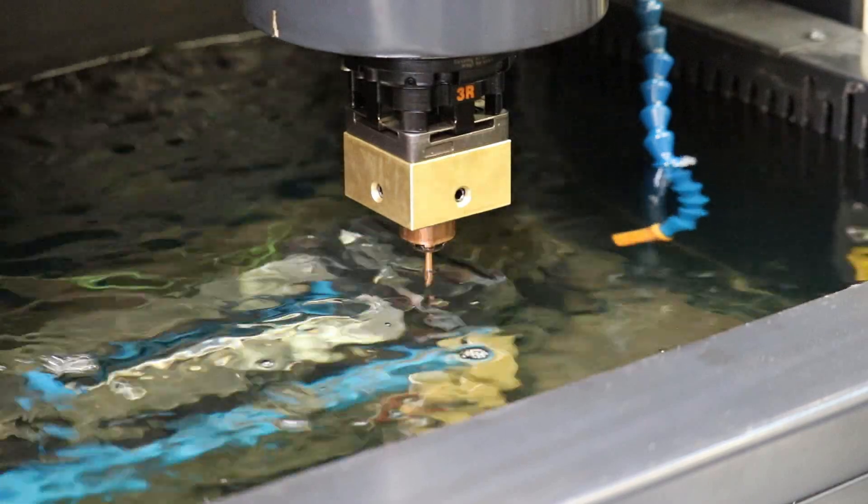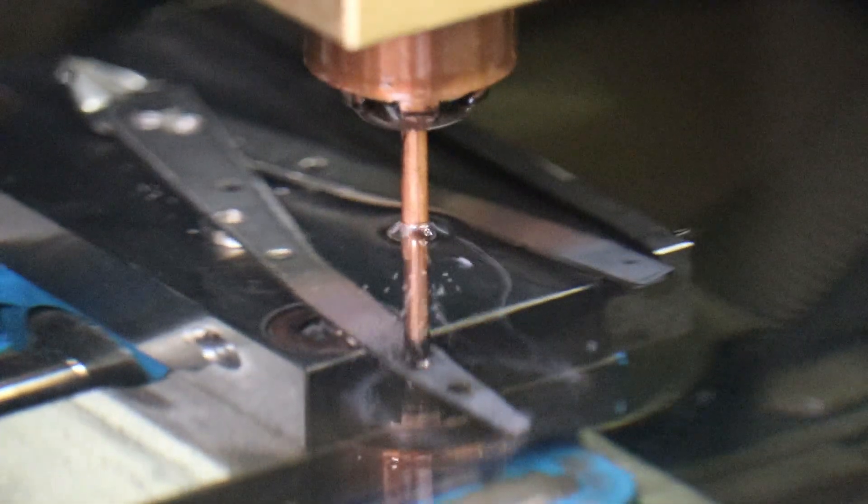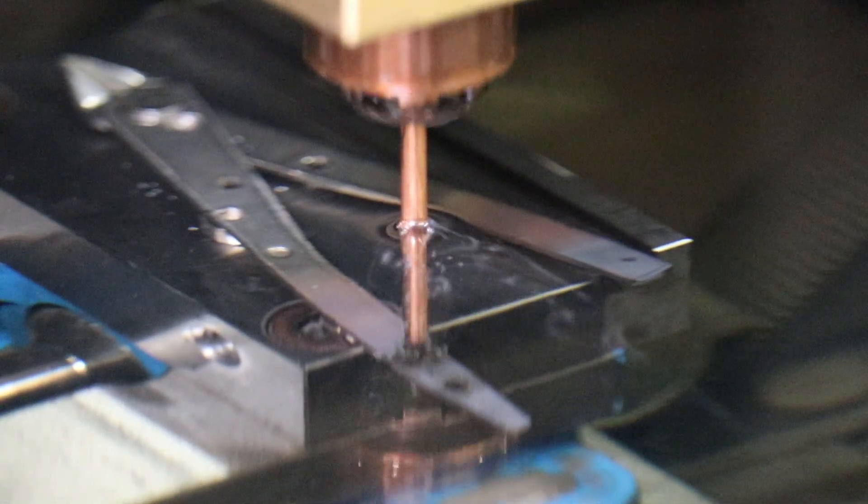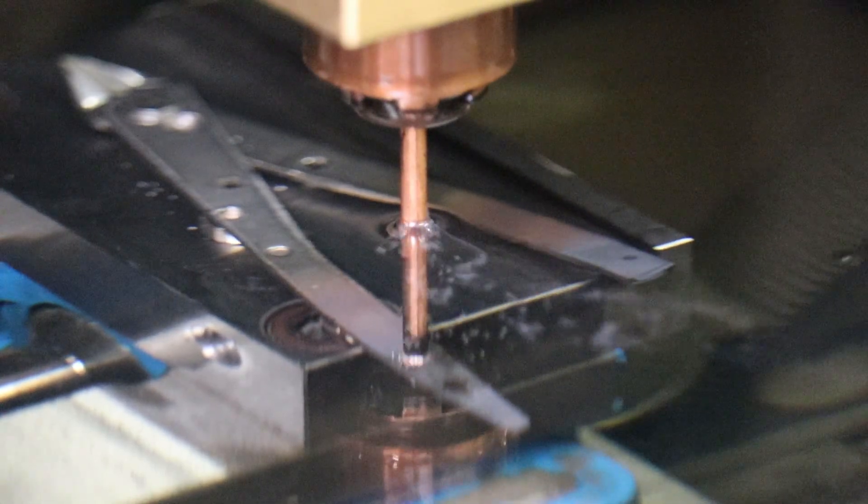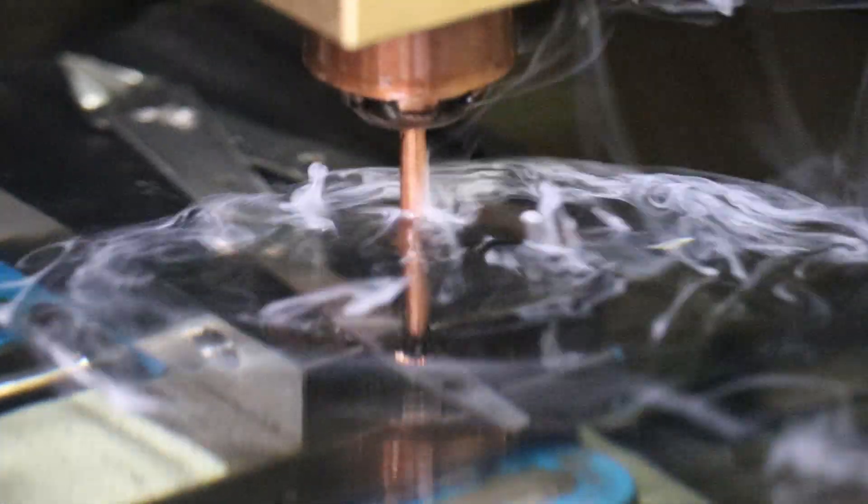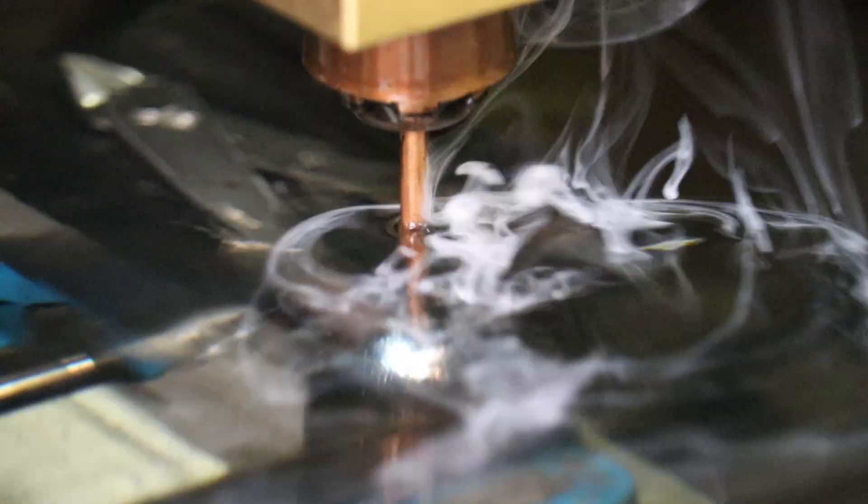When you give instructions to the EDM machine, it makes a very complicated program, which I don't understand. I just basically run it. So here we're effectively starting the same program again. We're going to load up the oil to submerge the part and start cutting again. And the hopping up and down, like I mentioned, is to clear out the black soot. You can see some of that soot under the water there. This is the most aggressive part of the profile.